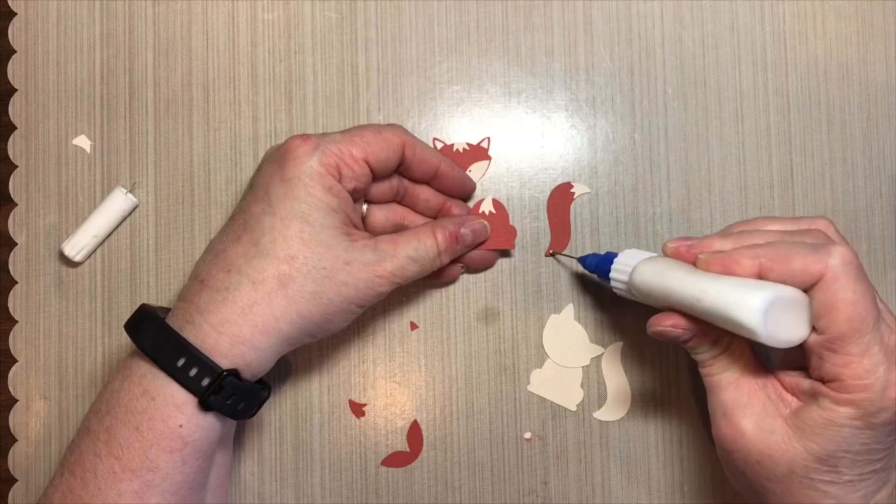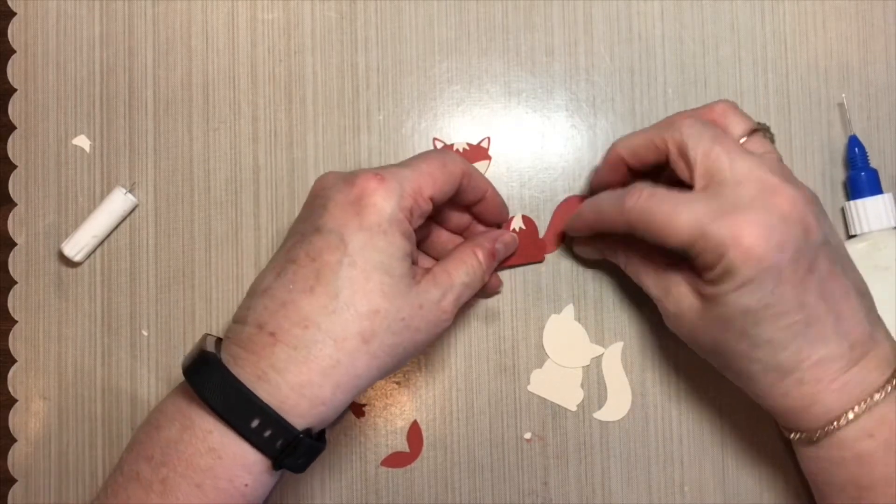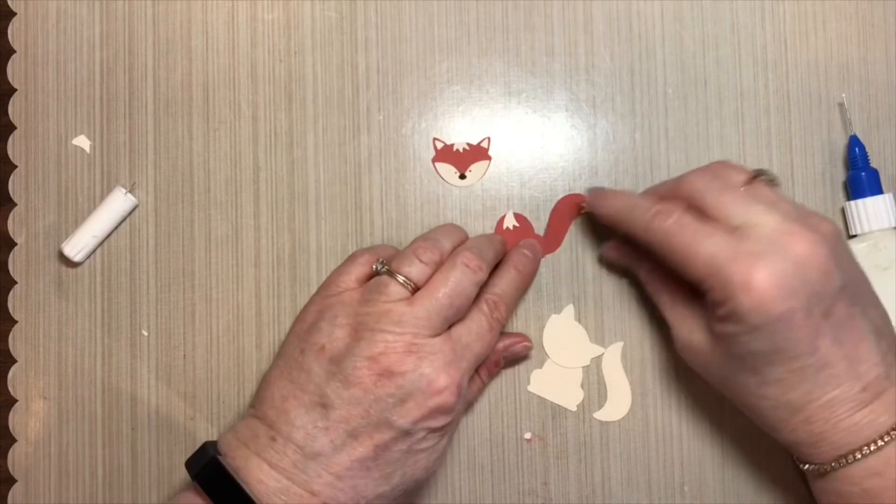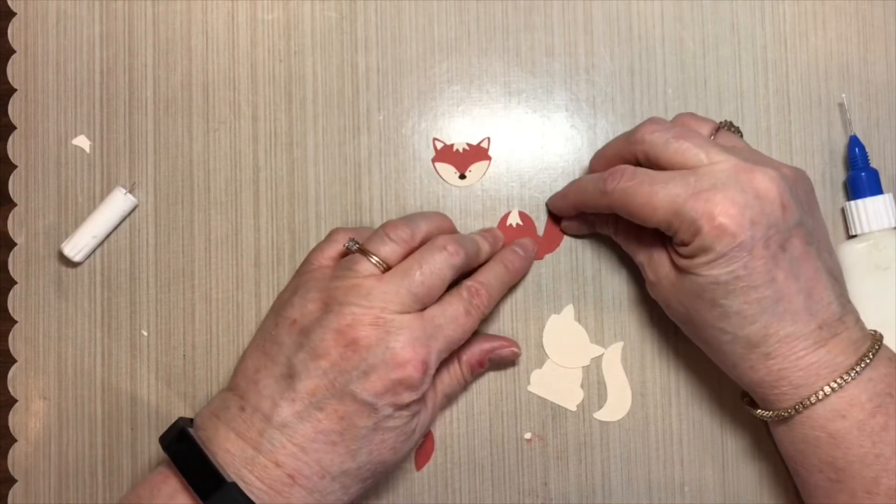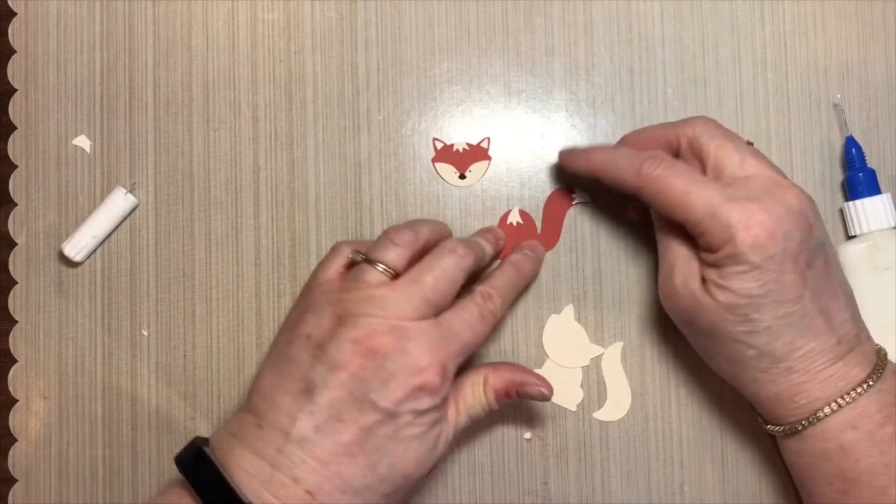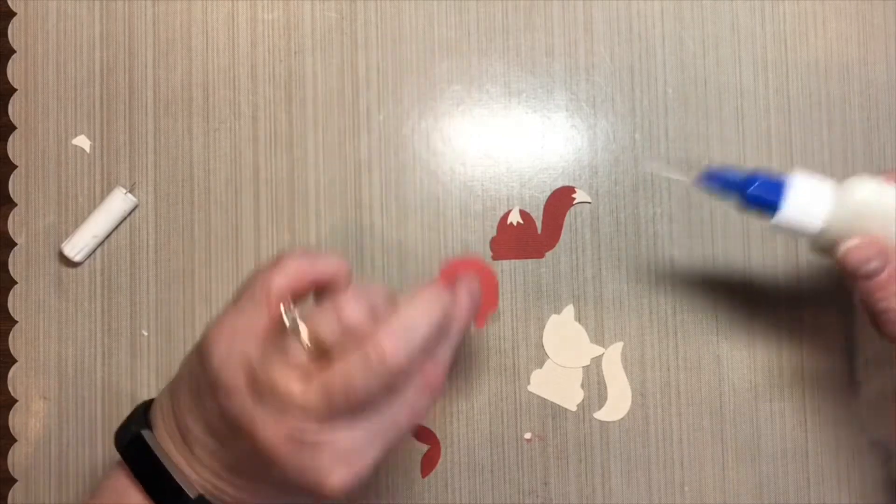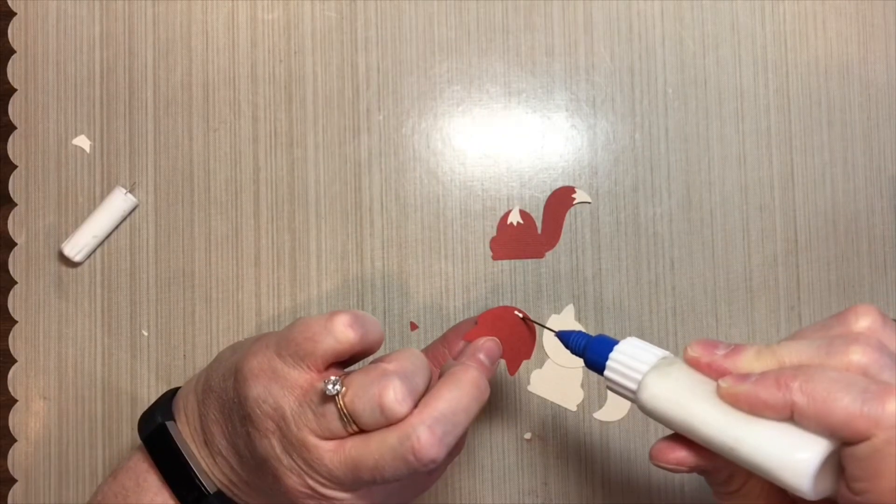Let's start assembling him, just as simple as a little bit of glue on his tail and position it however you want, more upright or to the side, whichever. And a little bit of glue and put his head in place.